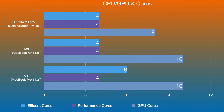The Ultra 7 256V in the Galaxy Book 5 Pro 16-inch has four efficiency cores, four performance cores, and an Intel Arc GPU with eight cores. The M3 MacBook Air has four efficiency cores, four performance cores, and a 10-core GPU — not the binned version. The M4 MacBook Pro has six efficiency cores, four performance cores, and a 10-core GPU.